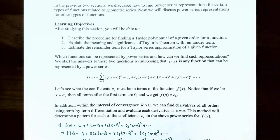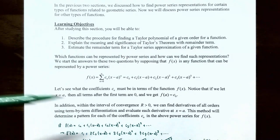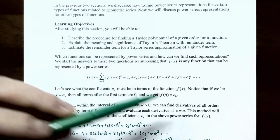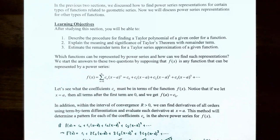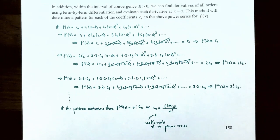We're going to see that the coefficient c_n must be in terms of the function f(x), so if you change f(x) the coefficients will also change. If we let x equal a, all terms after the first are zero, so f(a) equals c_0. Also, if you're within the interval of convergence (R > 0), you can find derivatives of all orders using term-by-term differentiation and evaluate each derivative at x equals a. This will determine a pattern for each coefficient c_n.